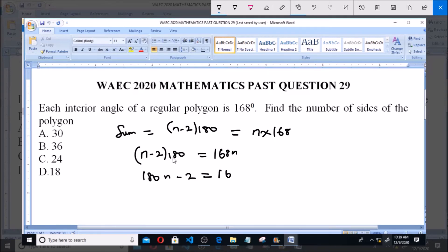From here we have 180n minus 360 equals 168n. From here we have 180n minus 168n equals 360.